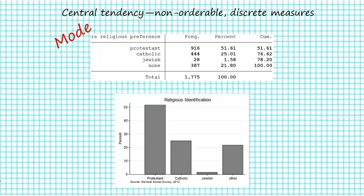Because this variable is non-orderable and discrete, we're not assigning a numerical value to the mode. For example, in the dataset, Protestants are coded 1, Catholics are coded 2, Jews are coded 3, and none are coded 4. However, it doesn't make sense to say the modal category is 1. For non-orderable discrete variables, we use the variable label.